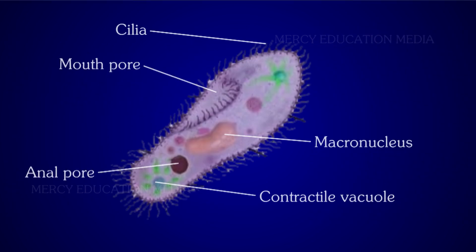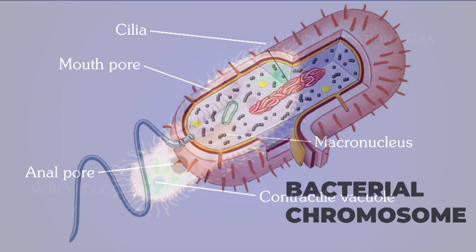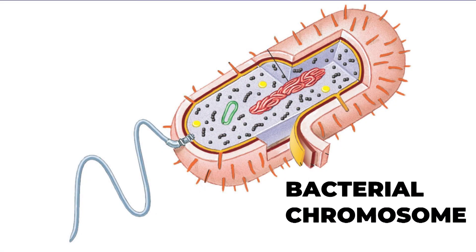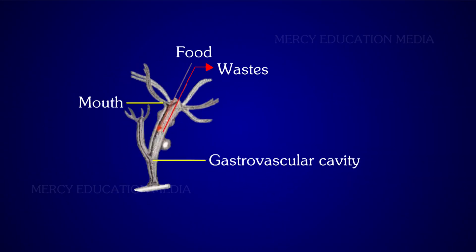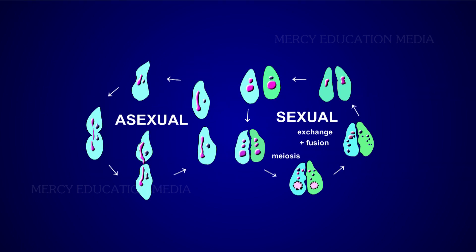The simple type of plant body is unicellular. In such forms, the single cell performs all the vital functions of life. It grows, prepares food, undergoes metabolism, reproduces, and completes its span of life.